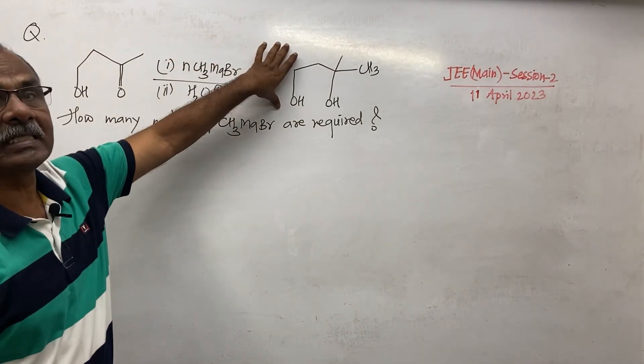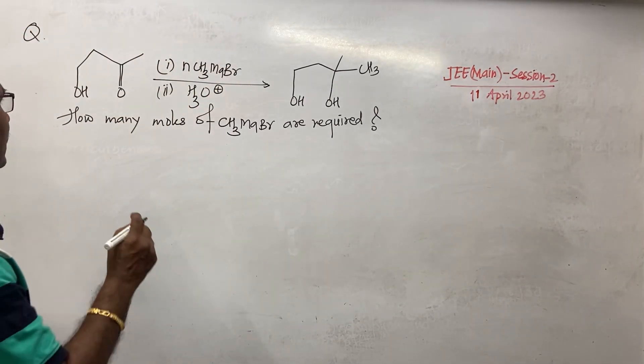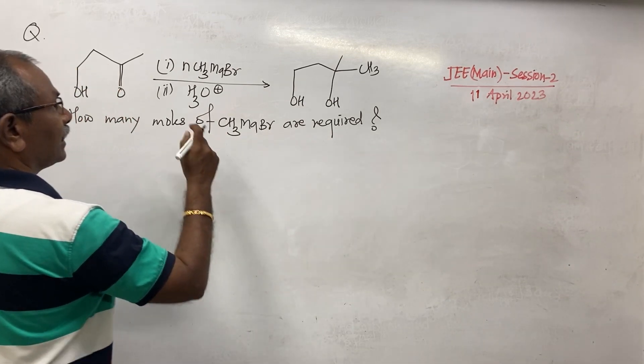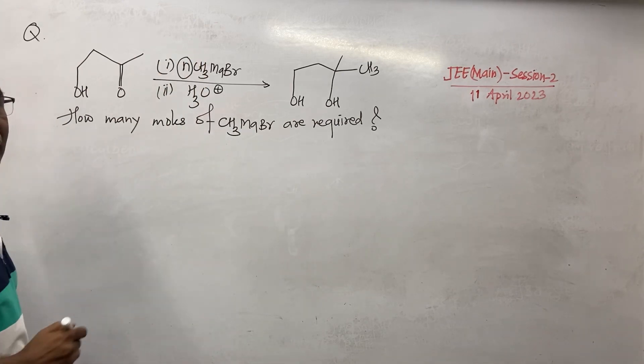Here reactant and product is given, reagent is also given. But what is asked, how many moles of Grignard reagent, that is methyl magnesium bromide, are required. Means here you have to calculate the value of N, whether it is 1, 2, 3, 4 and so on.